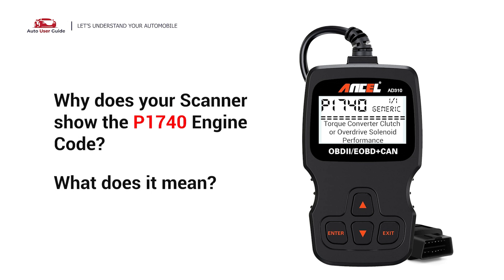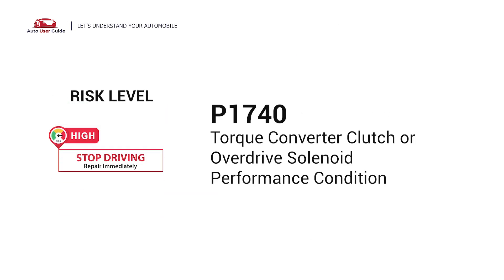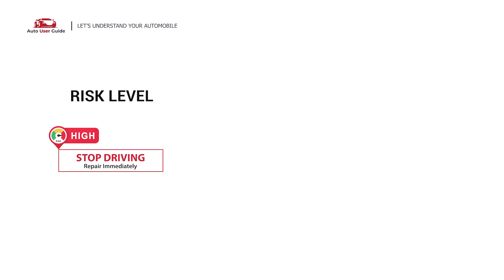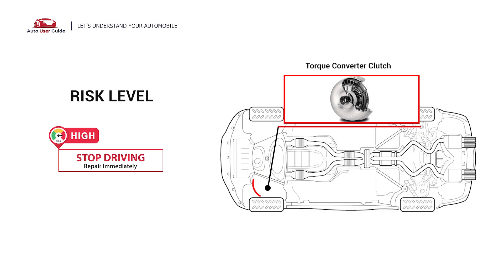Why does your scanner show the P1740 engine code? What does it mean? P1740 is a diagnostic trouble code for torque converter clutch, or overdrive solenoid performance condition. It indicates that the PCM has detected the expected RPM drop is not achieved while attempting to engage the torque converter clutch in overdrive.